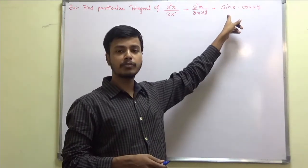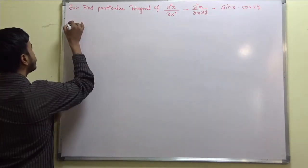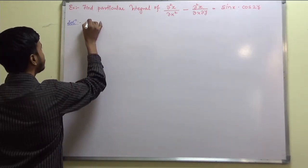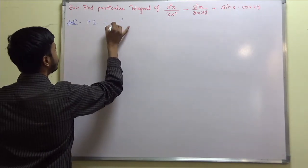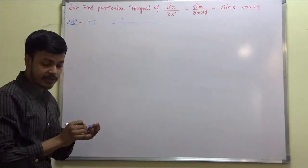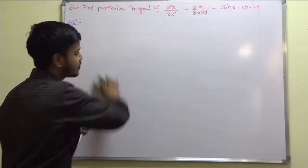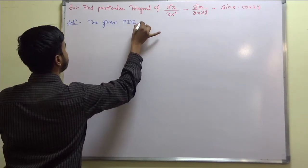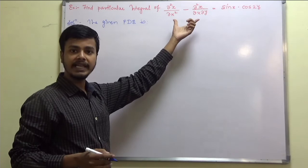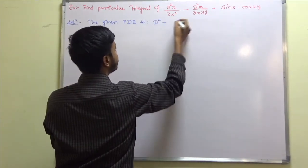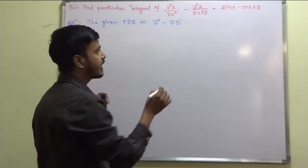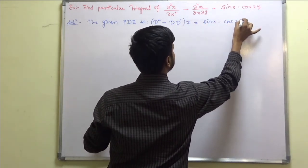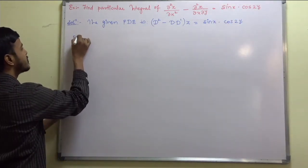When you encounter such type of problems on case number 2, then what you need to do is, as you can see, we just have to find out PI. The question demands only for PI, that is particular integral. So I am going to write down the particular integral only. Before I write particular integral, I have to start with the given thing. So the given PDE is, can you write in the form of operator D and D dash? So this is D square, this is D, D dash, and this is operating on z equals sine x into cos 2y. We have to find out its particular integral.